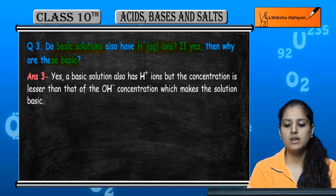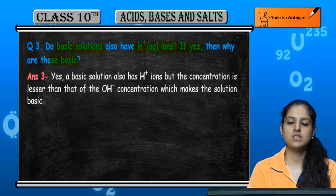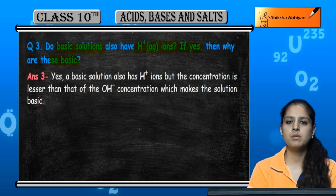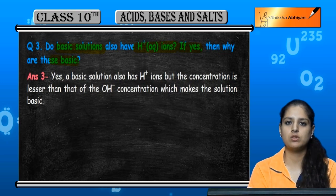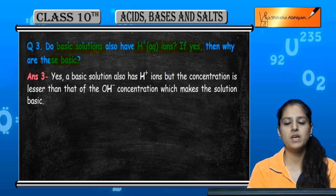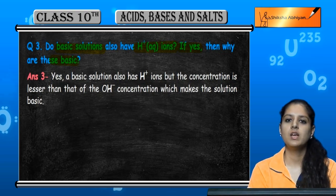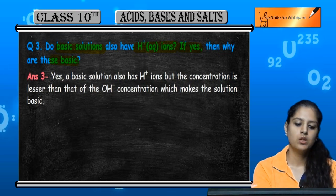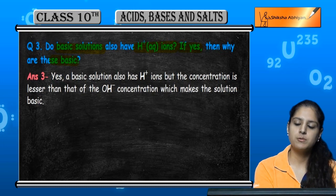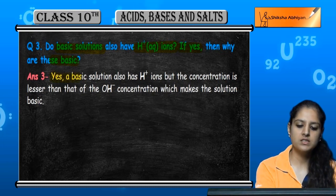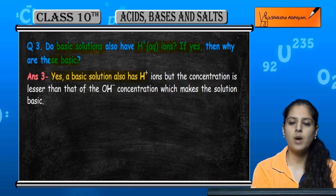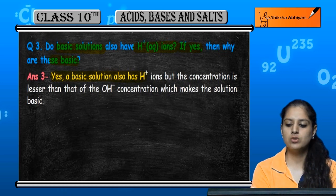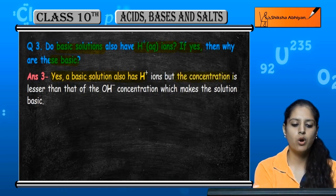If there are H+ ions, we call it acidic, and if it happens in a base we call it basic. So if we talk about H+ ions, they are present in basic solutions, but the amount — the concentration — is very low.